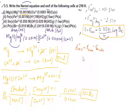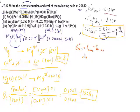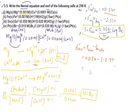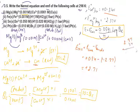Now calculate E°cell. The formula is E°cell = E°cathode − E°anode (right minus left). The reduction potential for copper (cathode) is +0.34 V, and for magnesium (anode) is −2.37 V. So E°cell = 0.34 − (−2.37) = 0.34 + 2.37 = 2.71 V.